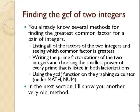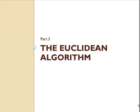You already know several methods for finding the greatest common factor of two integers, such as listing all the factors of two integers and seeing which factor in common is the greatest. You can use the prime factorizations and choose the smallest power of every prime that's listed in both factorizations, or you can use your calculator. There's a function under MATH, NUM, called GCD. In the next section, I'll show you a very old method that's also been used, and that's called the Euclidean algorithm.